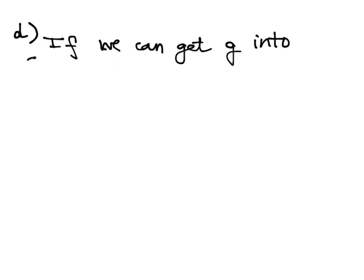Alright, so part D says the simple pendulum can be used in various ways to determine the local value of g. Okay, can the mass on the vertical spring be used to measure g? And so, the answer is basically, if we can get g into an equation with our spring, then we can do it.